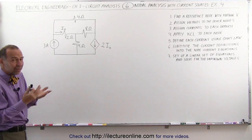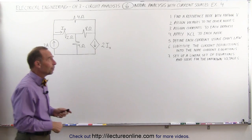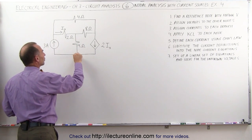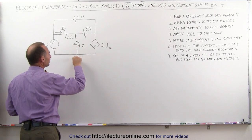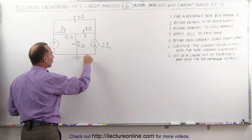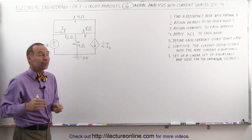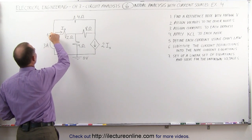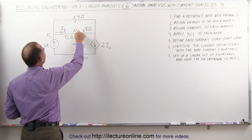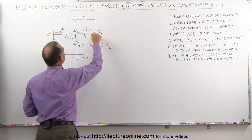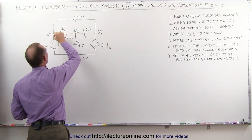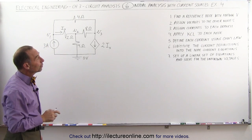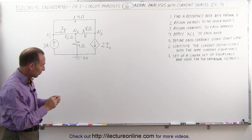The method is exactly the same as before with simpler examples. We start by finding a reference node with known voltage — we connect this to ground and set it at zero volts. The next step is to assign voltages to the three nodes: we call them V1, V2, and V3 — the three node voltages we need to determine. The next thing we do is assign currents to each of the branches.